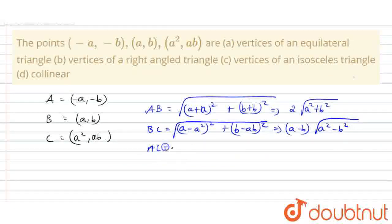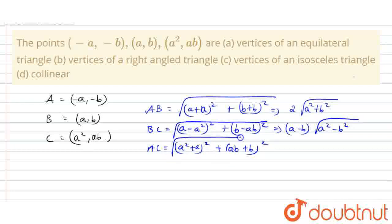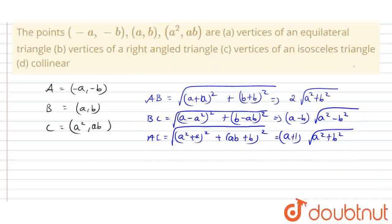Next, I am going to find the AC distance. So AC distance equals the square root of (A² + A)² + (AB + B)². If we solve this, we take (A + 1) outside, giving AC = (A + 1)√(A² + B²). So by solving this, AC is equal to AB plus BC.